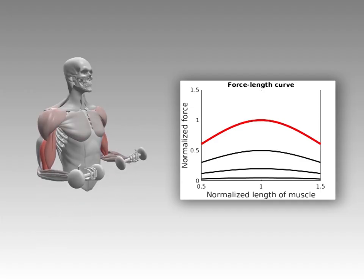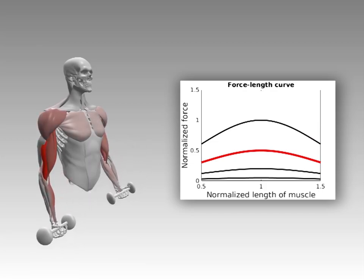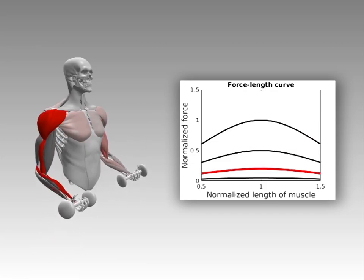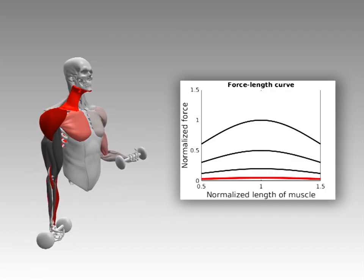Our muscle model inherits the material property and contraction dynamics of the hill-type model. The force-length curve indicates the strength of the muscle. We can simulate muscle deficiency by scaling the curve. As the muscles become weaker, nearby muscles activate more to compensate for the weakness.